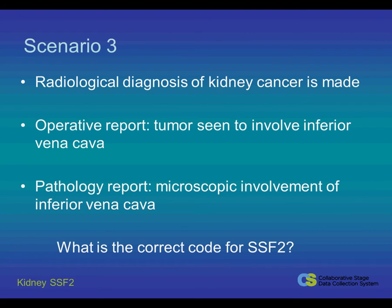For our third scenario, we have a patient who has a radiological diagnosis of kidney cancer. The operative report states that the tumor is seen to involve the inferior vena cava. No more specific information about the vena cava involvement is available in the patient's chart. Pathology confirms that the inferior vena cava is involved. What is the correct code for CS Factor 2 in this case?